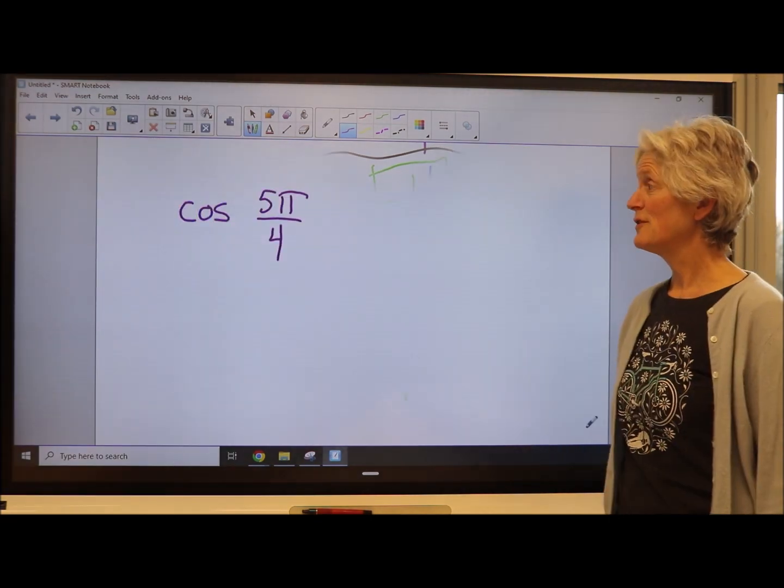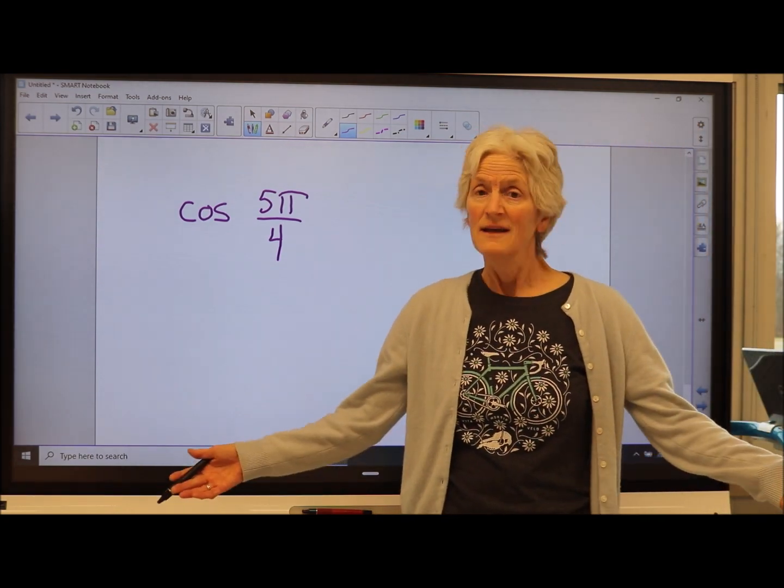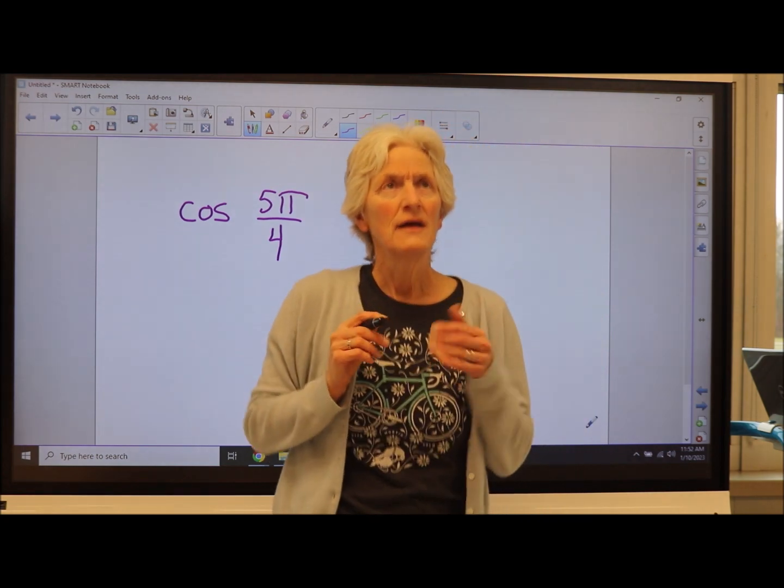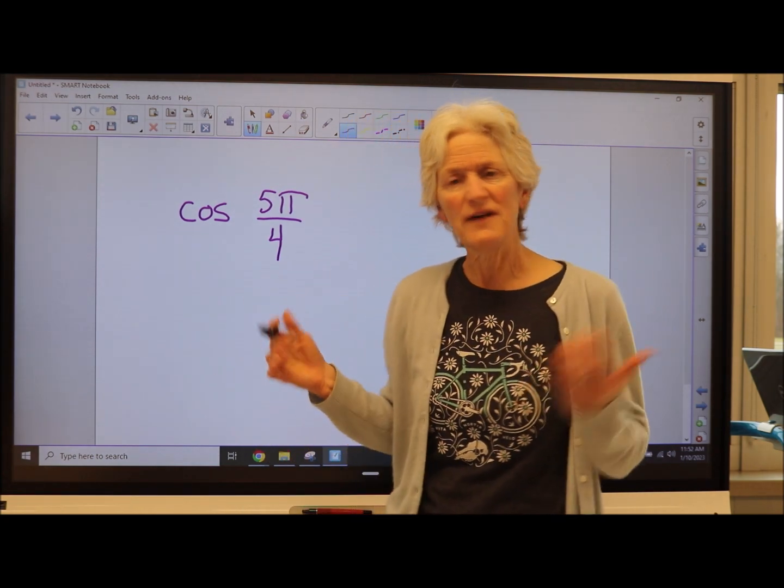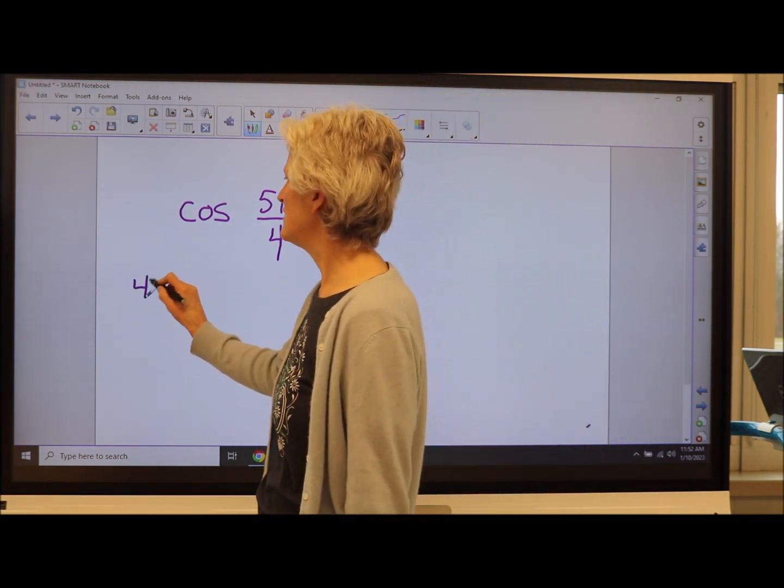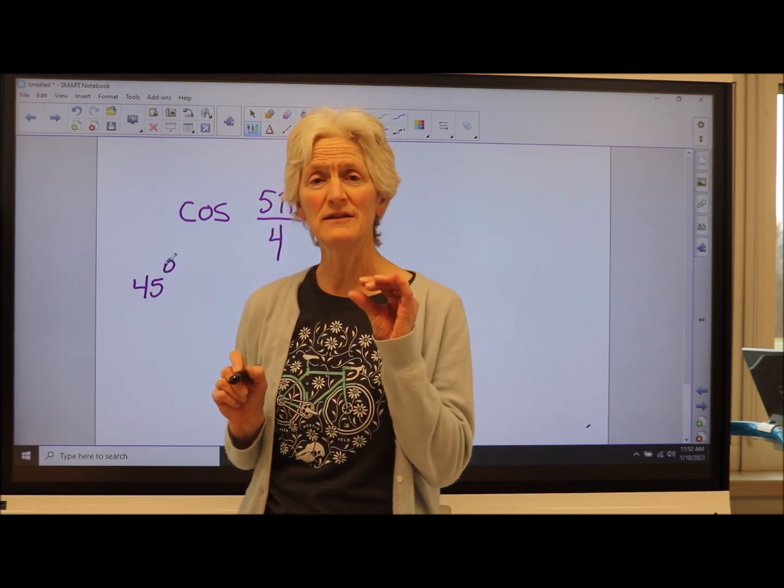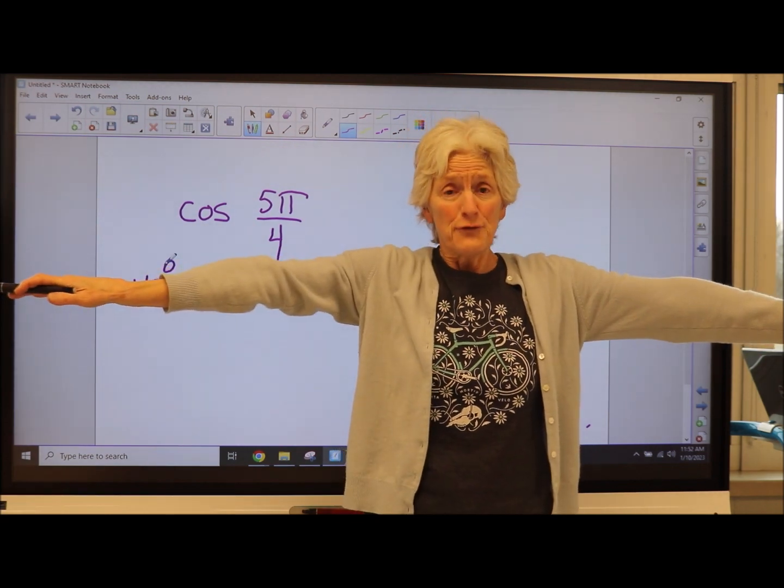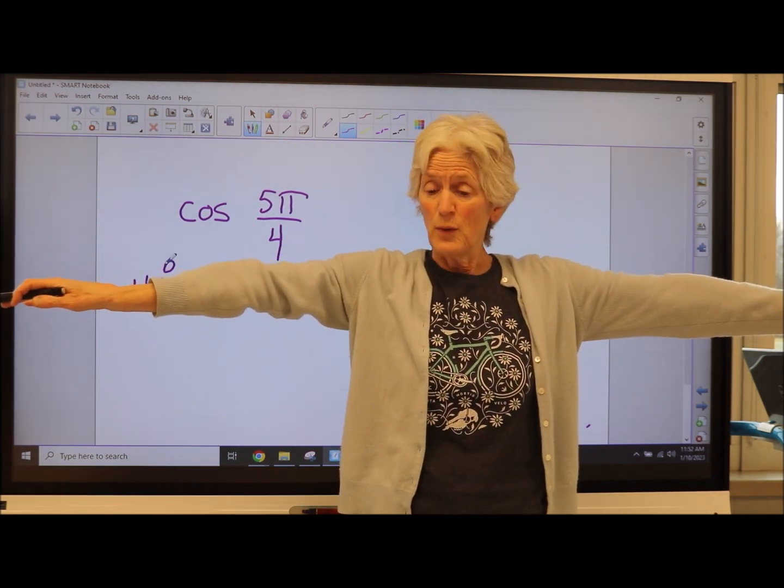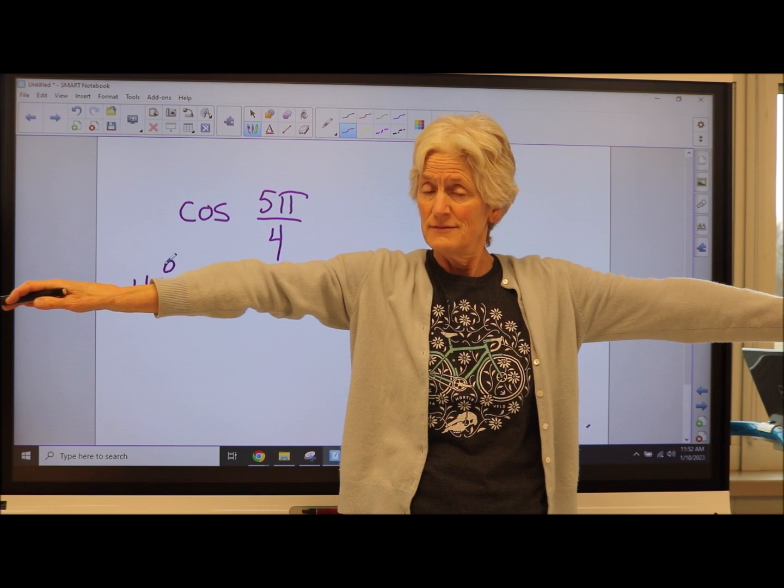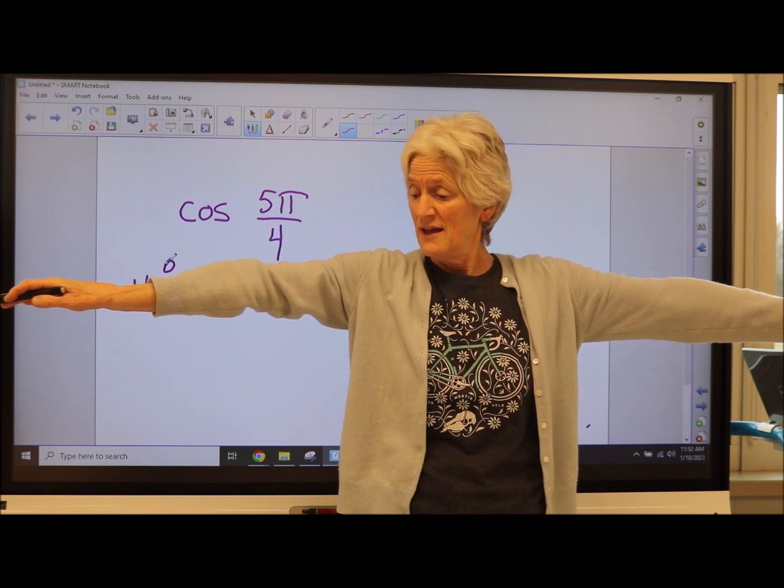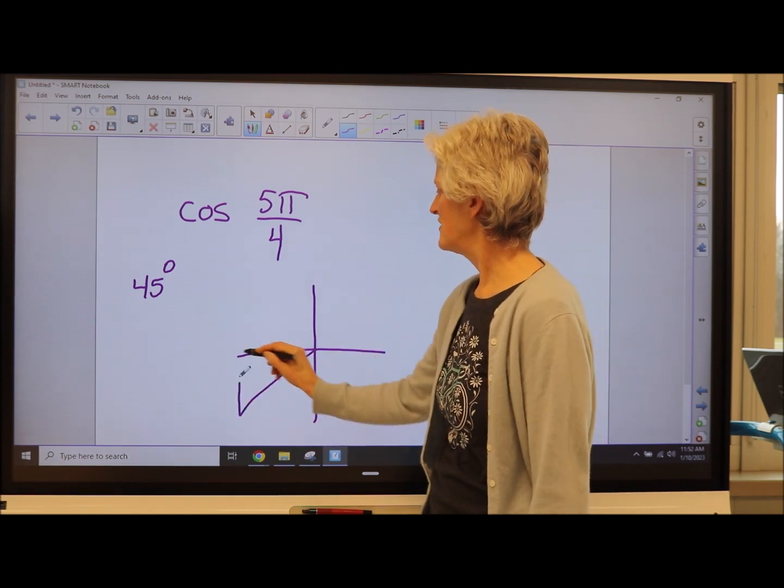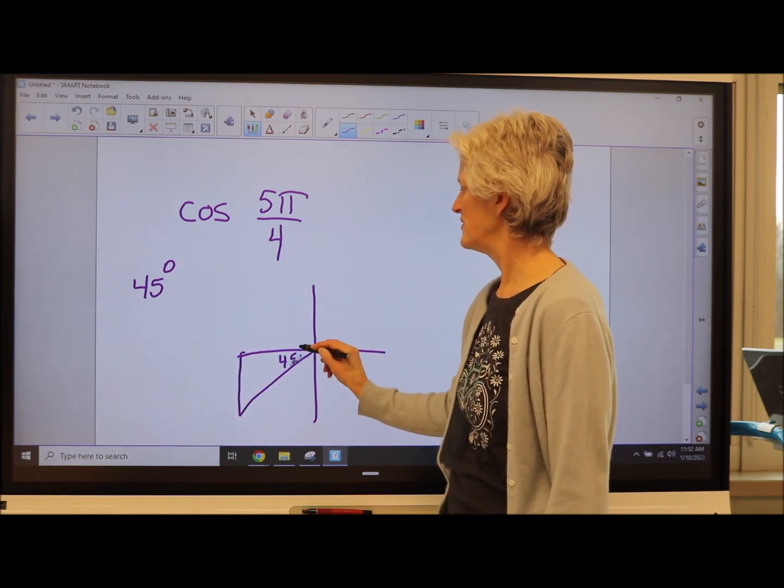How about the cosine of 5 pi over 4? Let's look at the denominator. It's a fourth. A fourth of pi, that's 45 degrees. So I know 45 degrees will be my reference angle. What quadrant am I in? 5 fourths. That's bigger than 4 fourths. 4 fourths is 1 pi, right? 4 fourths pi is 1 pi. So that's going to be in the third quadrant, 45 degree reference angle.